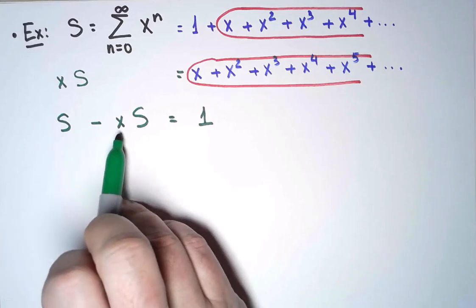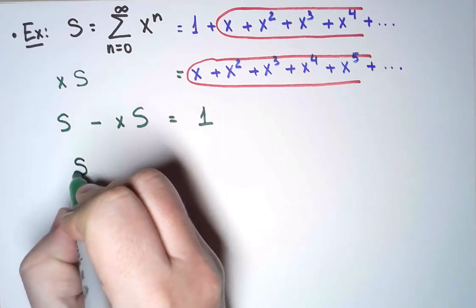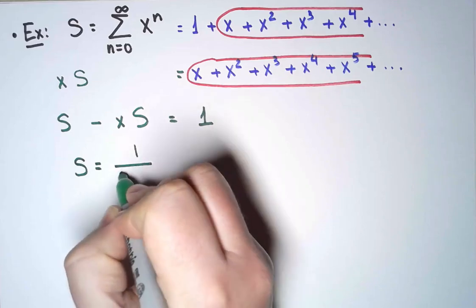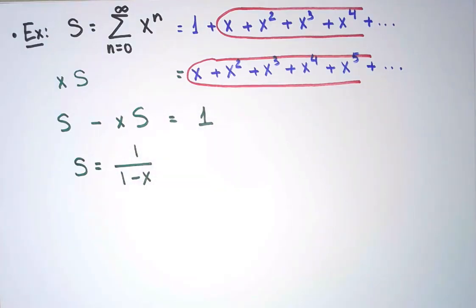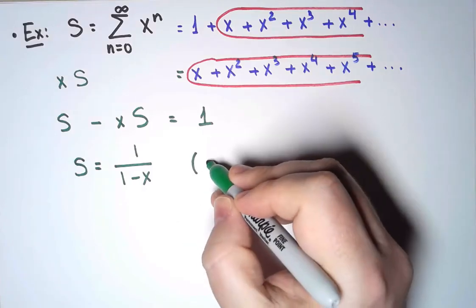Next, I can take now common factor 1-x here, and send it to the other side dividing, and I end up concluding that s is equal to 1 over 1-x. But be careful, I cannot divide by 0, so for this to be true, I need to assume that x is not 1.